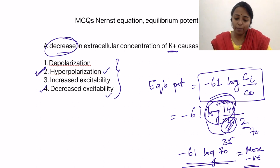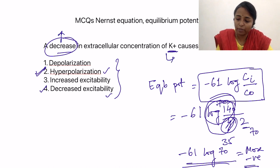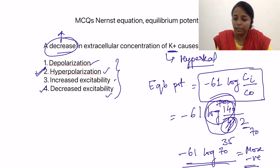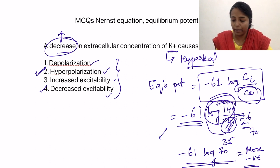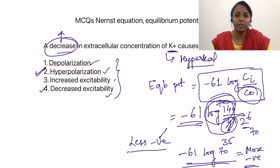With the same logic, if there is an increase in extracellular concentration of potassium — that is hyperkalemia — then the answers would have been depolarization and increased excitability, because in that case the denominator increases, say from 4 to 6. This value becomes less negative, and when the potential becomes less negative, it is known as depolarization.